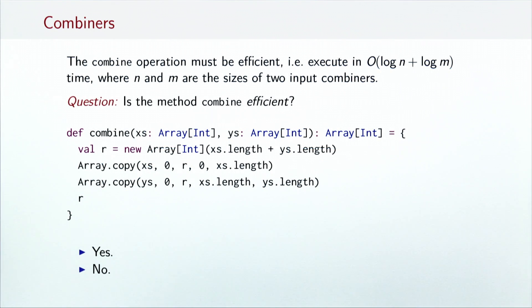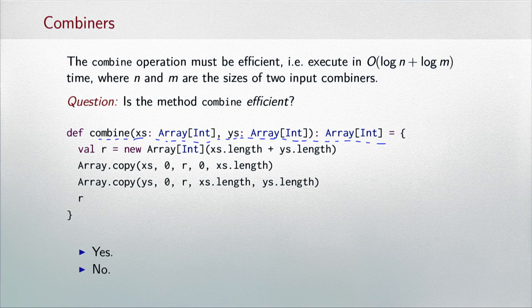In the following, we show a combine implementation for two arrays. For simplicity, we have slightly diverged from the previous combine signature, but the semantics of this method remain the same. Given two integer arrays produce a third array that is their concatenation. So here is a question for you: Is this method efficient enough?